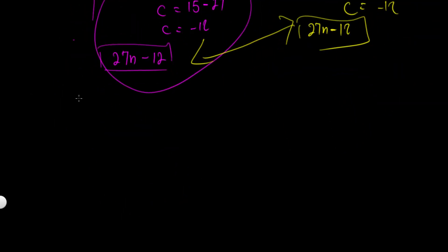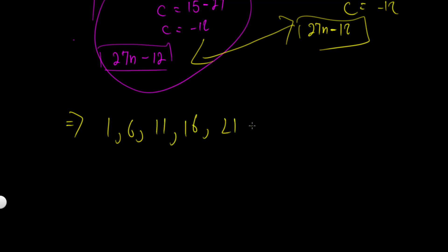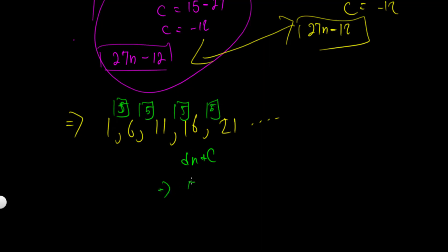Let's do another example. We have the sequence 1, 6, 11, 16, 21, and so on. Again, this is always in the form dn + c. The common difference here is 5 — confirmed across all four terms using a calculator. So our expression will be 5n + c.